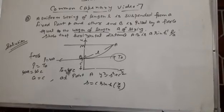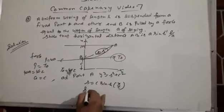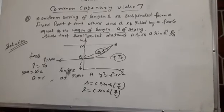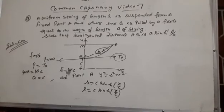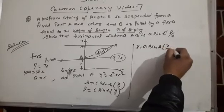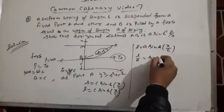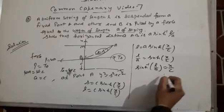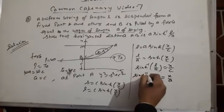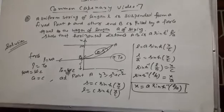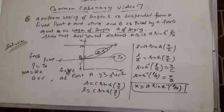At point A, s equals l. So l = c sinh(x/c). We need to find x. l/c, and c equals a as we found, so l = a sinh(x/c). Therefore l/a = sinh(x/c), giving sinh⁻¹(l/a) = x/a. Substituting c = a, we get x = a sinh⁻¹(l/a), which is the horizontal distance AB we needed to prove.